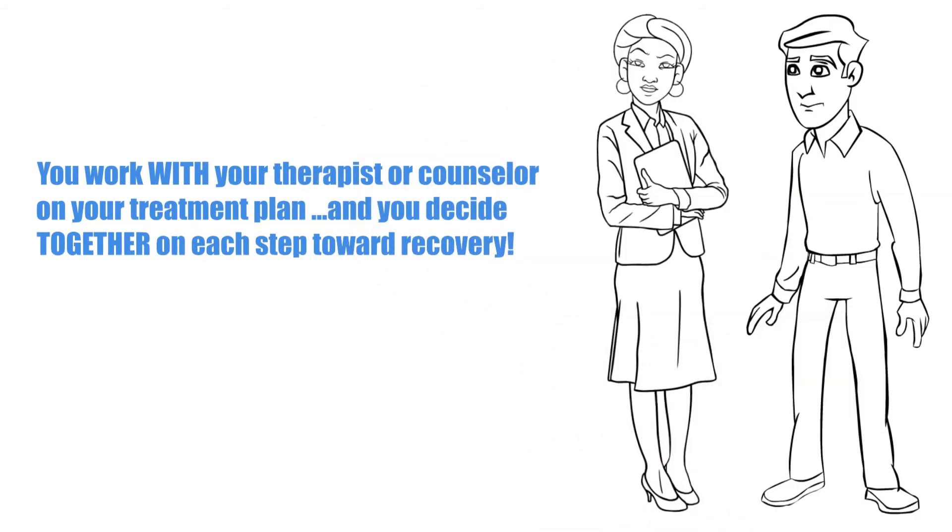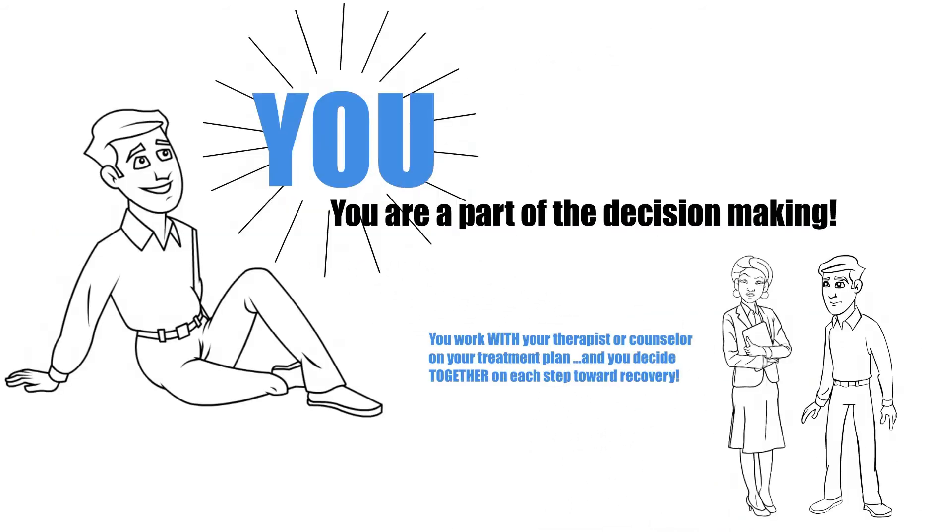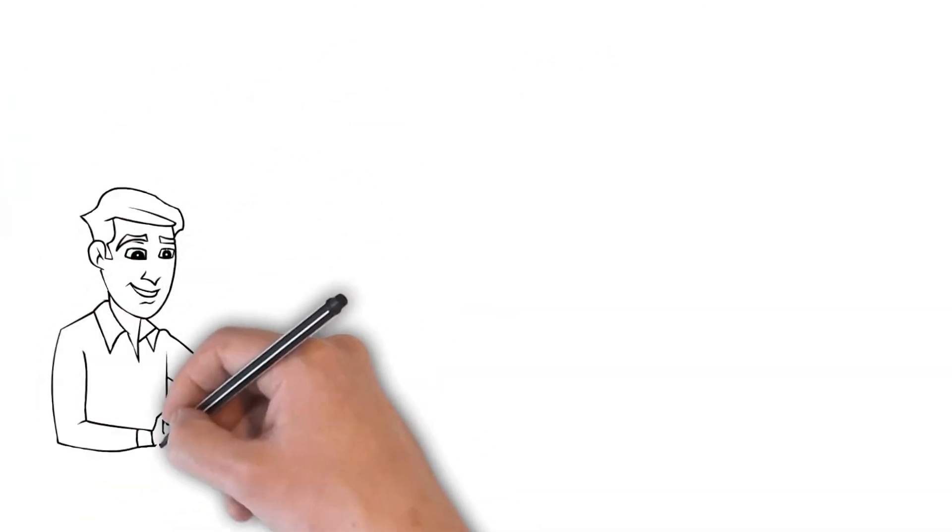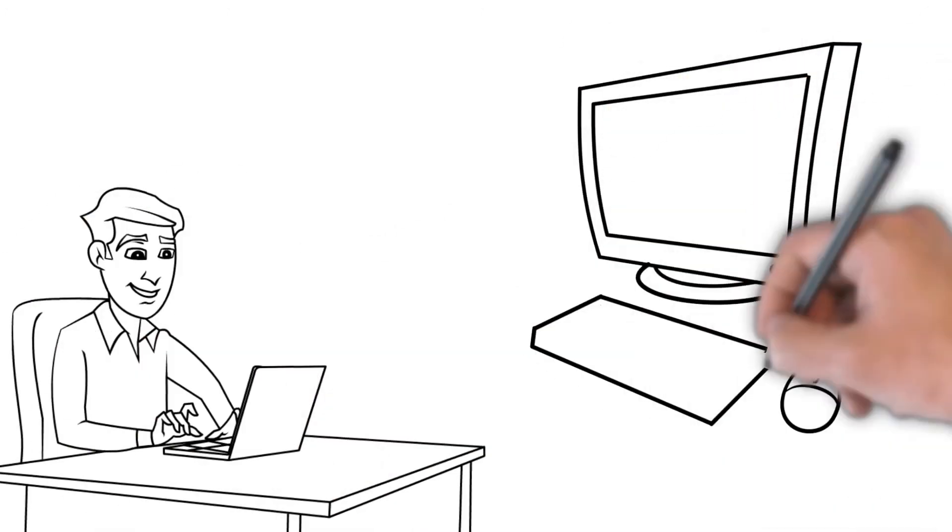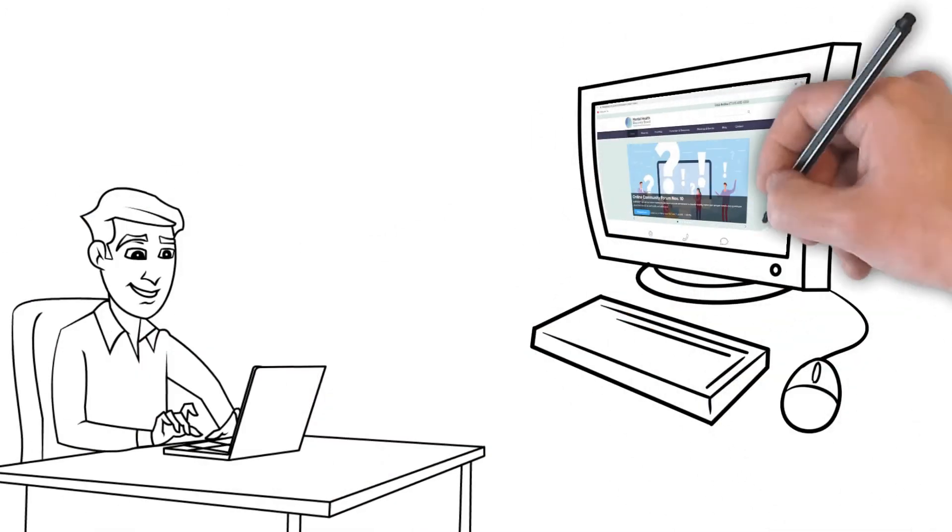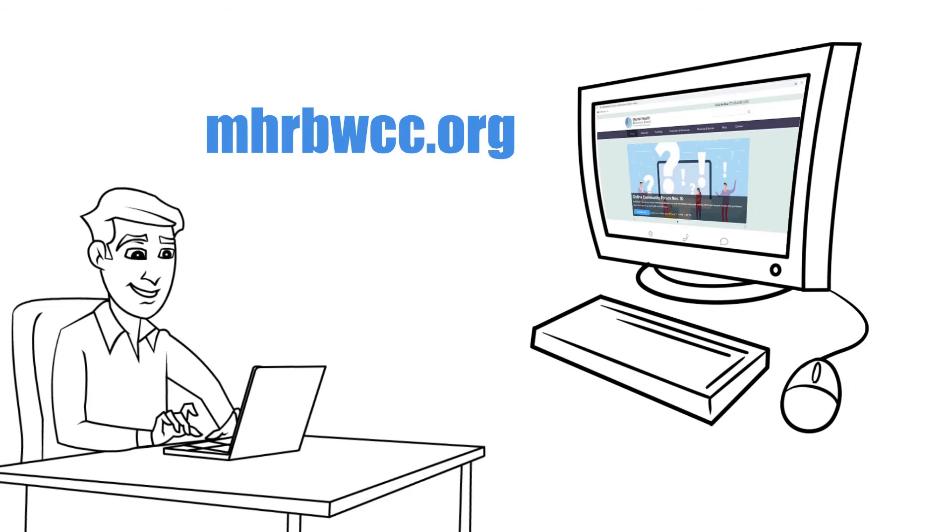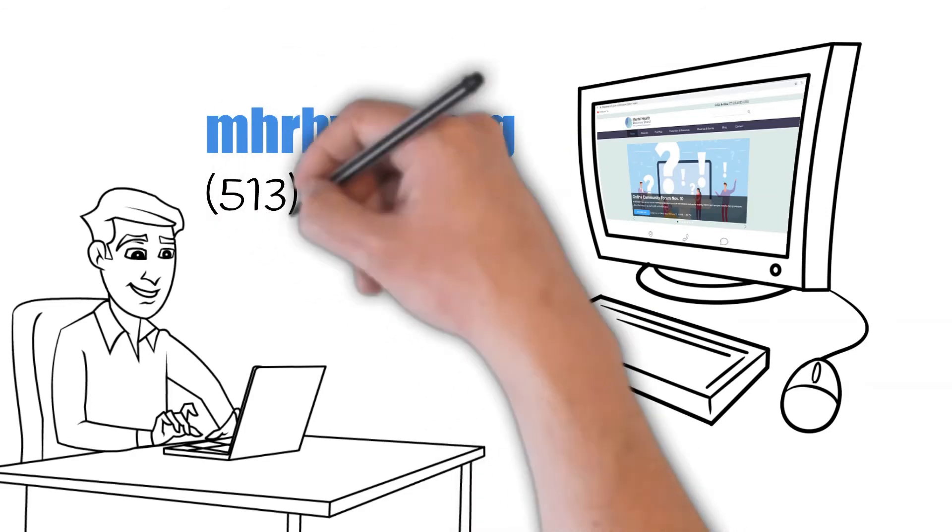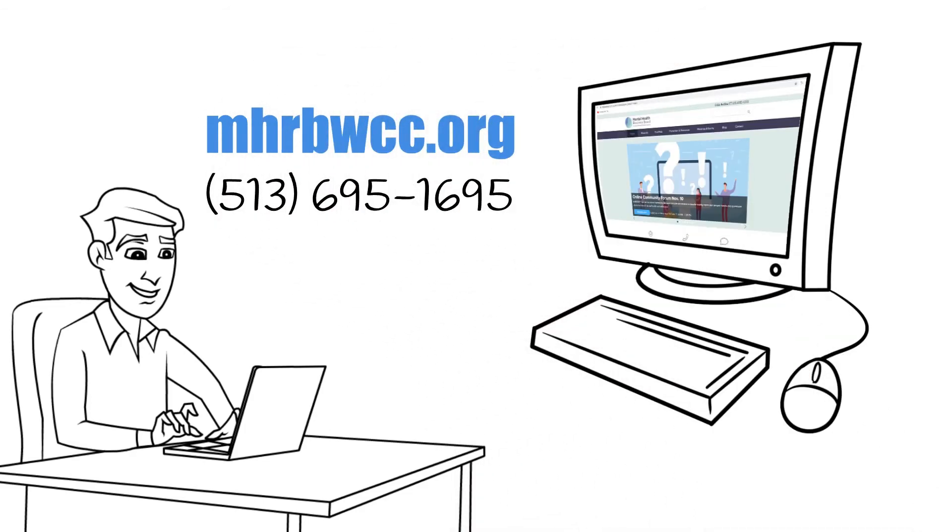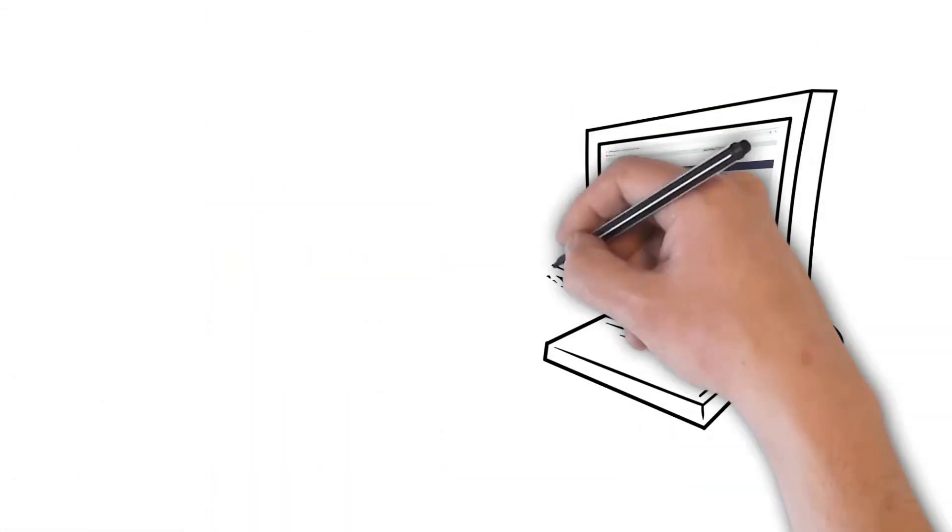So what's next? Well, pick up a copy of the Provider Network Guide on our website at mhrbwcc.org or give us a call at 513-695-1695. You can also visit provider websites through our website—just click on Find Help.